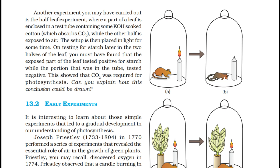Early experiments: it is interesting to learn about those simple experiments that led to a gradual development in our understanding of photosynthesis. Joseph Priestley (1733–1804), in 1770, performed a series of experiments that revealed the essential role of air in the growth of green plants. Priestley discovered oxygen in 1774.